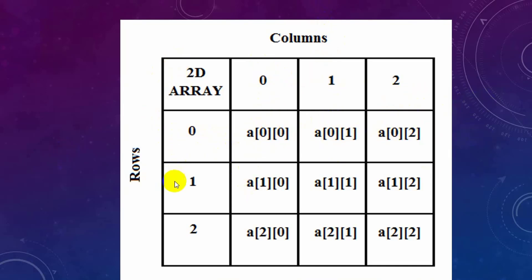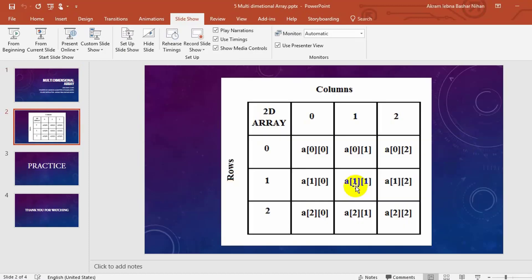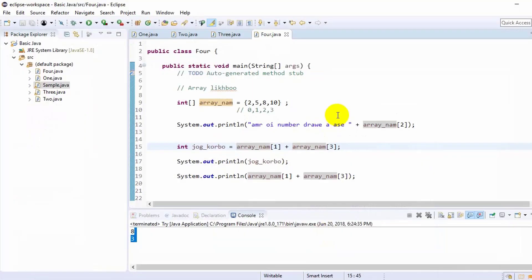First row is 1 number, and then row is 1 number and 1 number. Then row number 1, 1 number column. Then the third row is 1 number and 2 number.